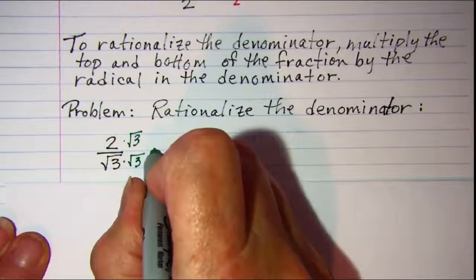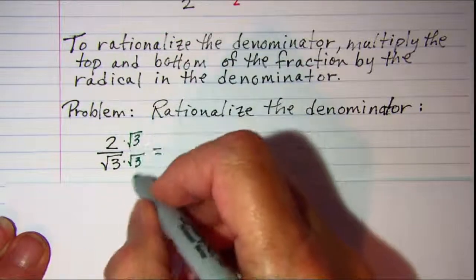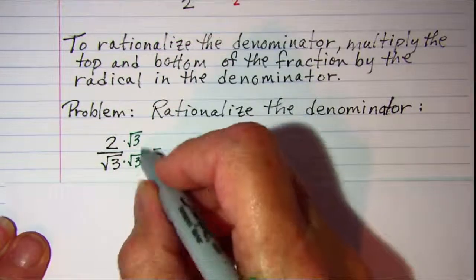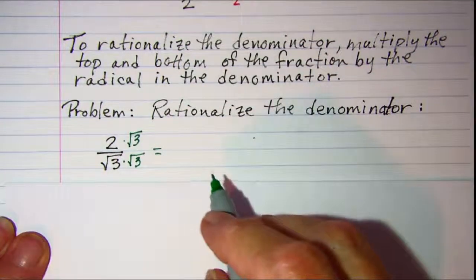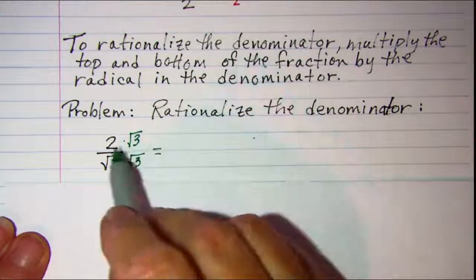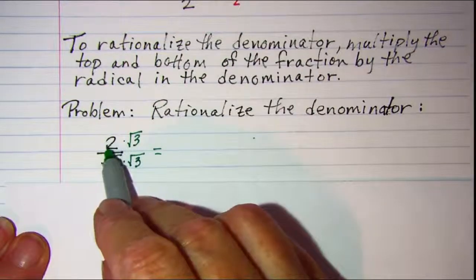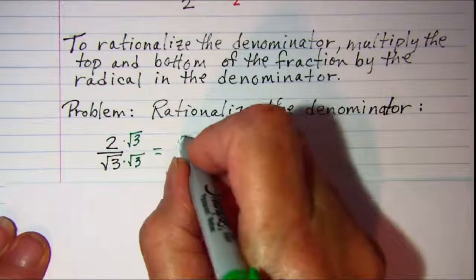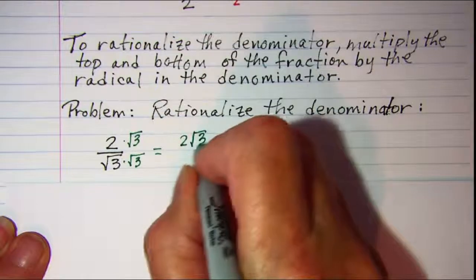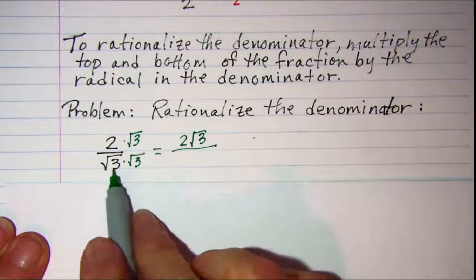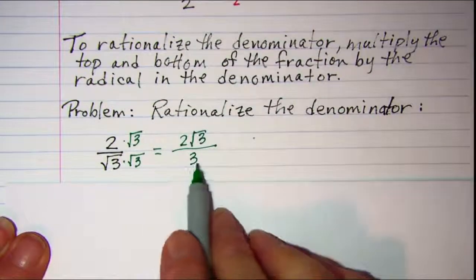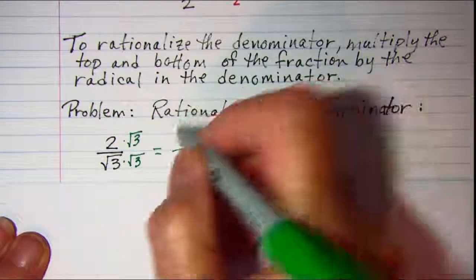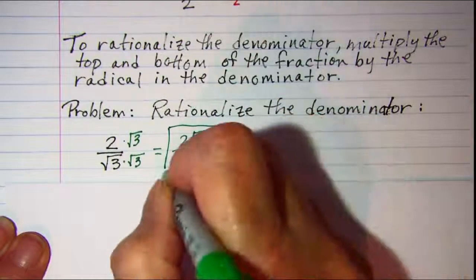The reason you do both is because root 3 over root 3 is 1, so you're not really changing your fraction. You're multiplying by 1. If I multiply in the top, I have 2 root 3, and root 3 times root 3 is 3. Now my denominator is a rational number and I'm good to go.